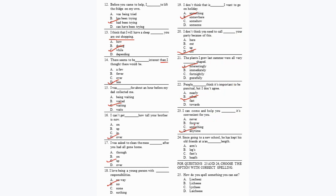Question 23: 'I can come and help you dash it's convenient for you.' It should be 'whenever it's convenient for you' — option B. Question 24: 'Since going to a new school he has kept his old friends at a/an dash length.' The phrase is 'at an arm's length,' meaning to maintain distance in relationships — option A.